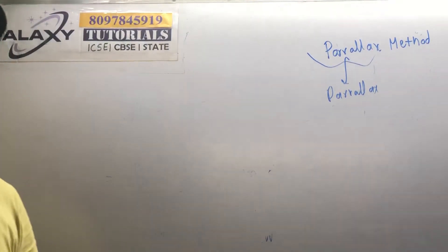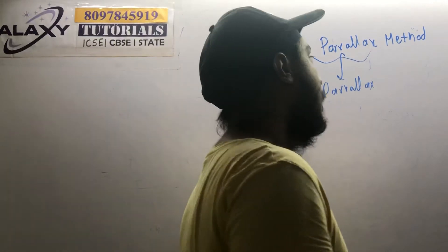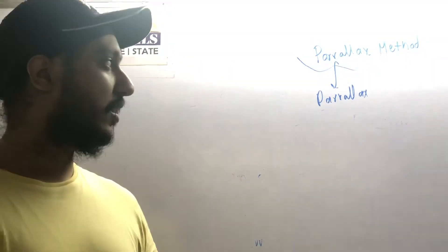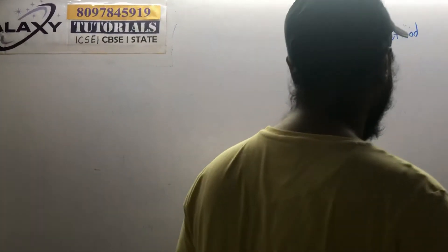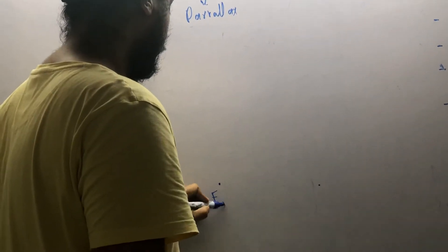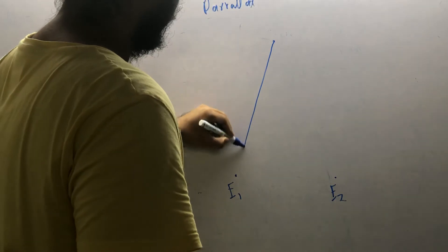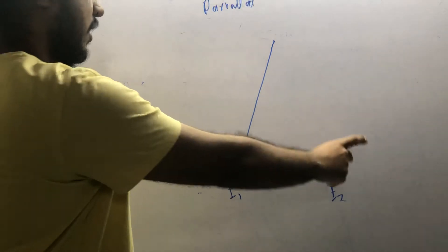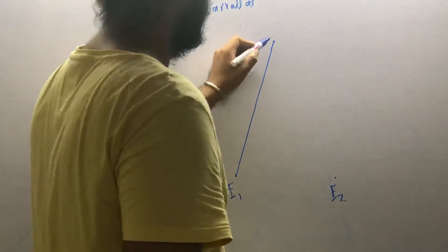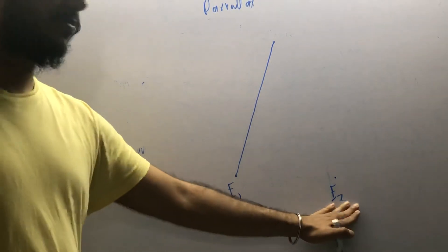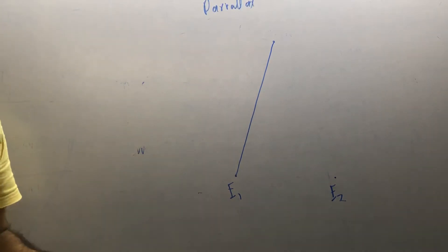The parallax effect is very important for measuring the distance between stars that are very far away from Earth. Consider two eyes, E1 and E2, at a distance from each other, observing an object. The object does not actually change its position — the effect occurs because the observer is changing position. That is why the object appears to shift, and this is known as the parallax effect.